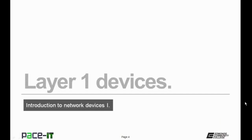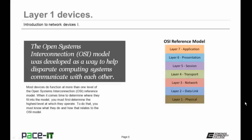I'm going to begin with layer 1 devices, but first we need to talk about the open system interconnection model, the OSI model. It was developed as a way to help disparate computing systems to communicate with each other. The OSI reference model has seven layers: layer 1 is the physical layer, layer 2 is data link, layer 3 is network, layer 4 is transport, layer 5 is session, layer 6 is presentation, and layer 7 is application.